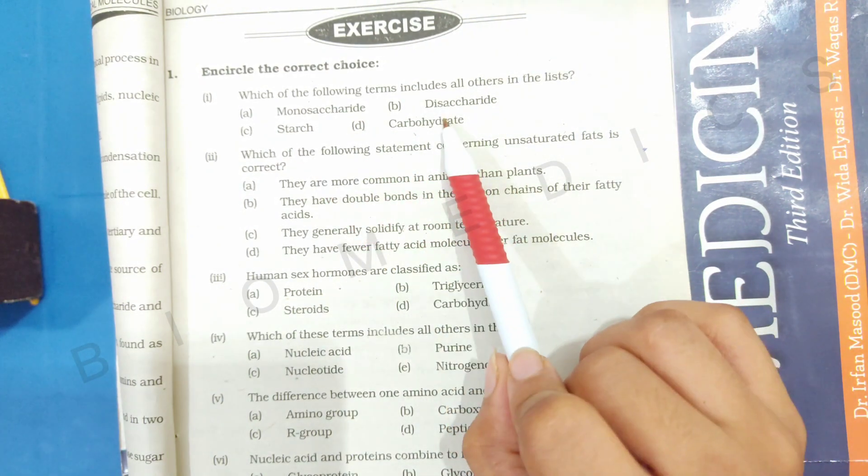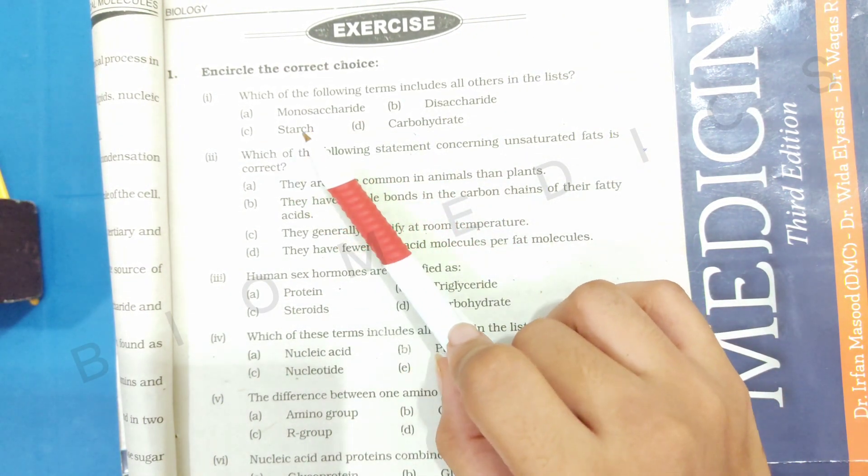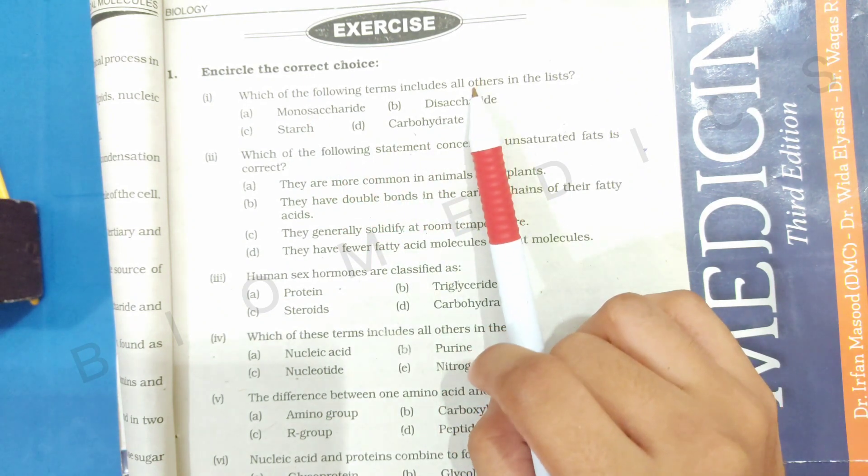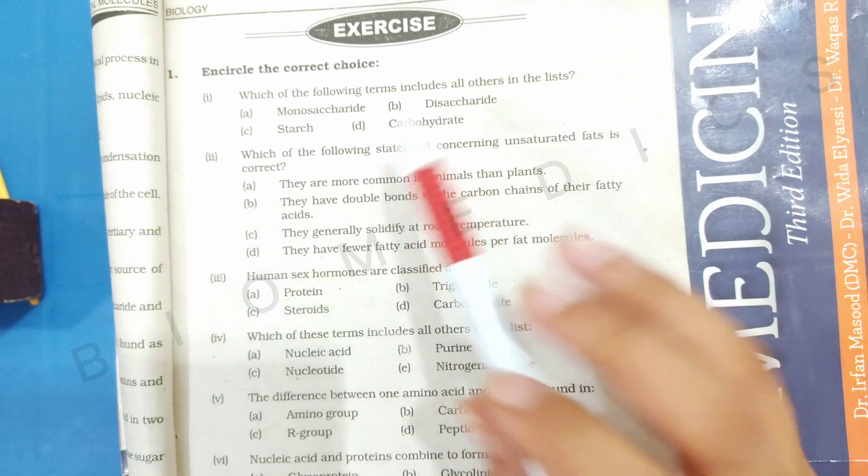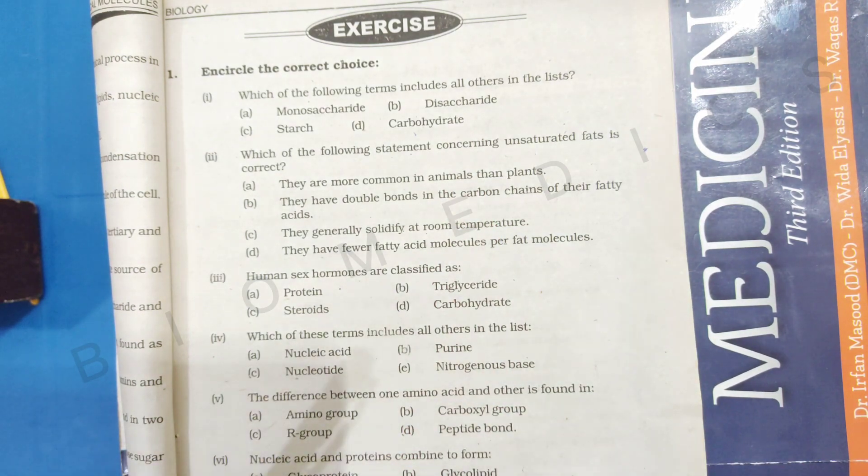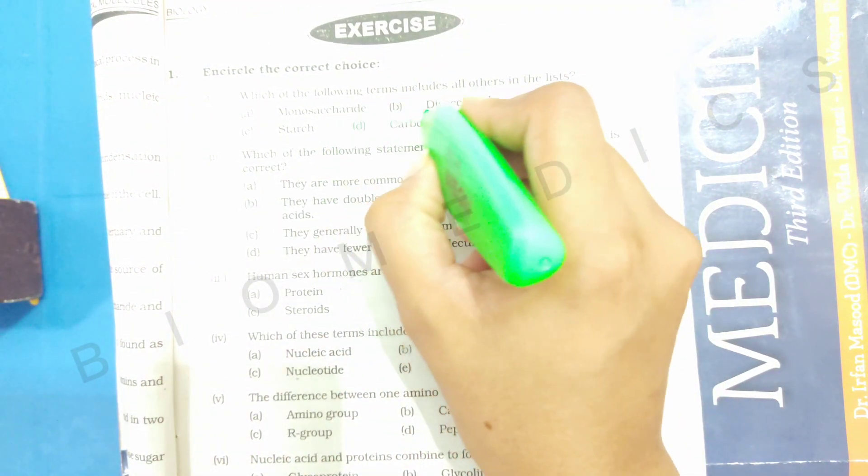Because there are starches, but starches are polysaccharides. And here we have mono and disaccharides. So mono and disaccharides are included in carbohydrate. That's why our correct answer will be carbohydrates.